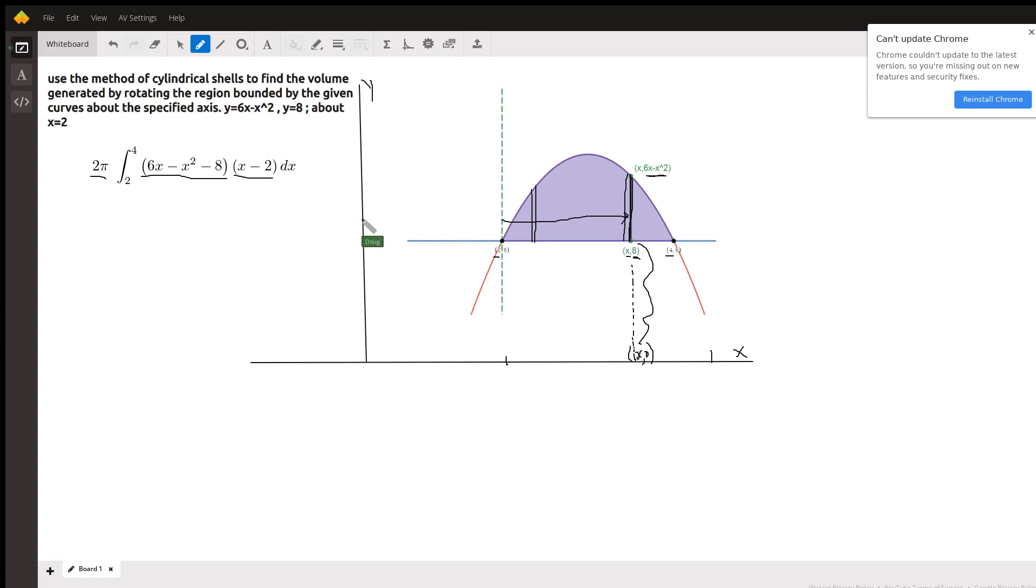So we have to subtract this part to leave the average radius, and that distance is always 2, so x minus 2 is the average radius. Okay, so multiply those two polynomials together.